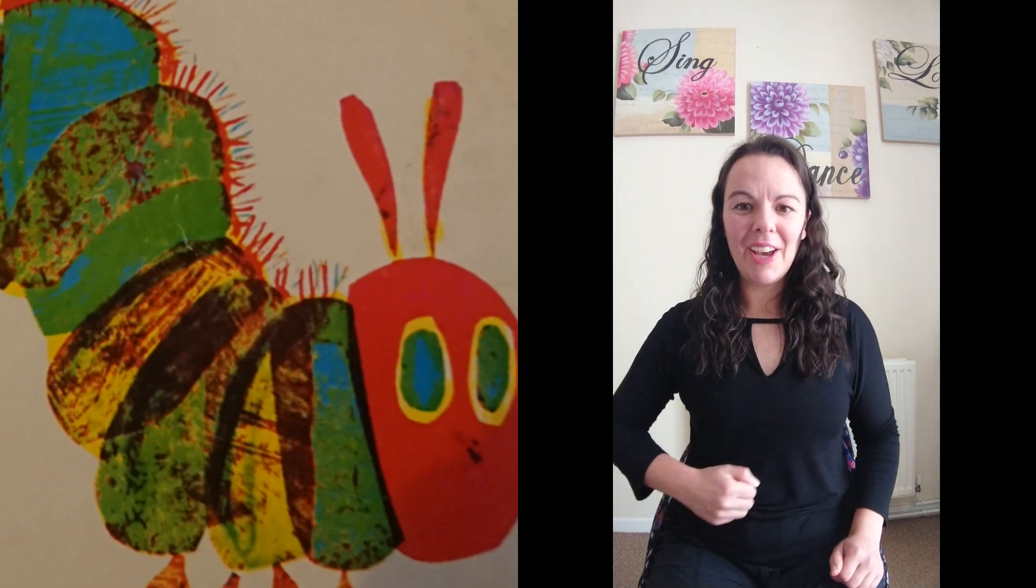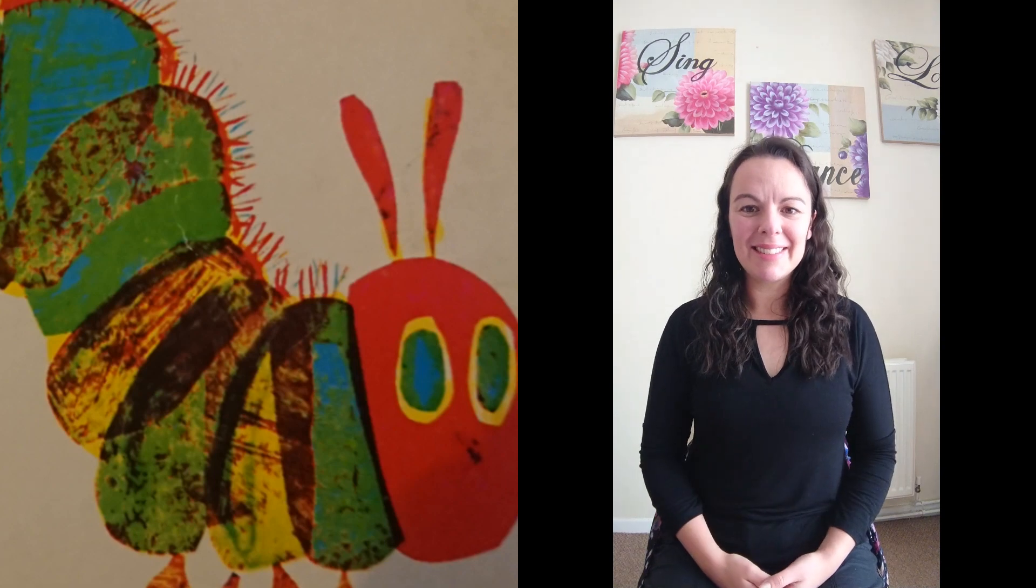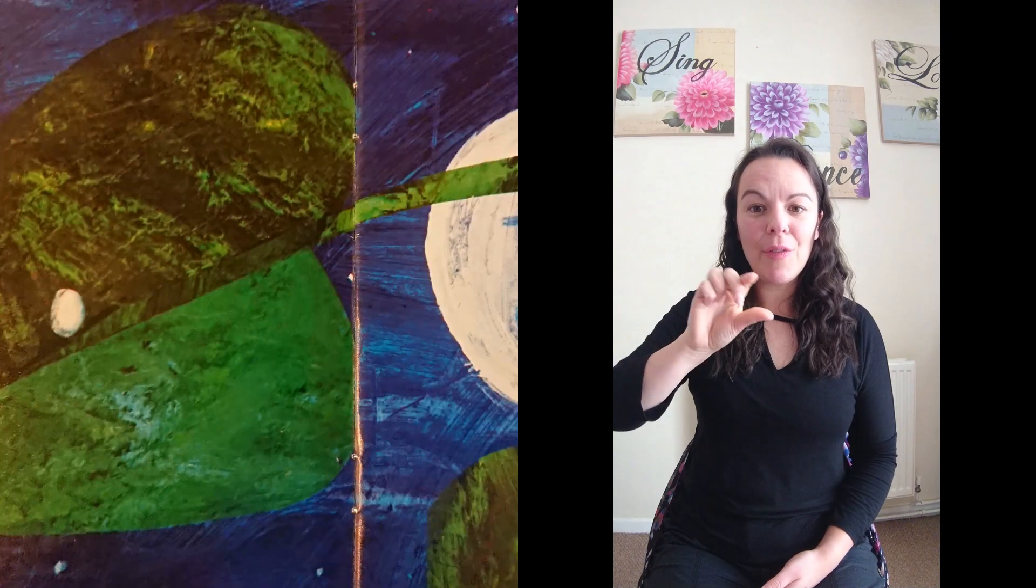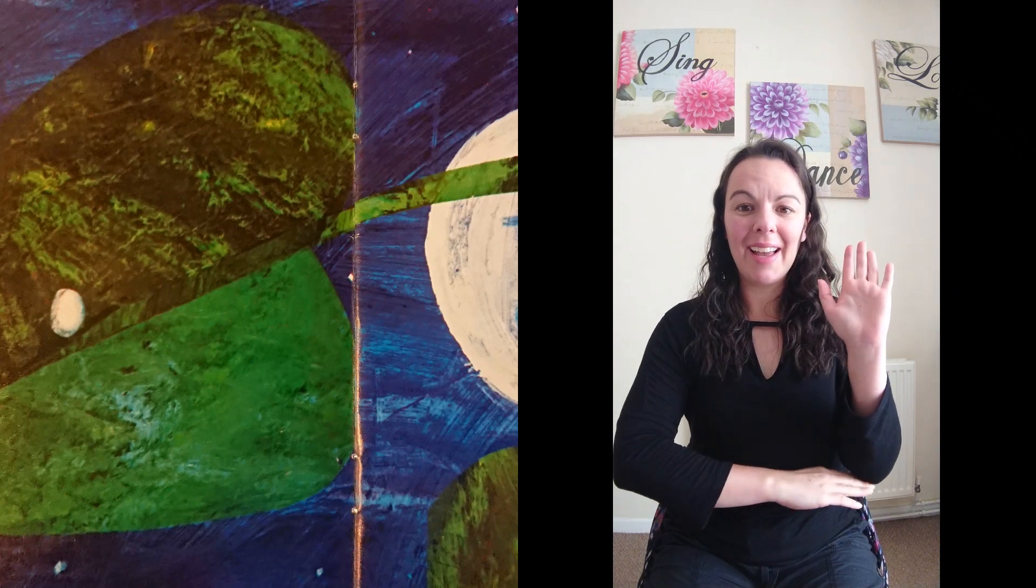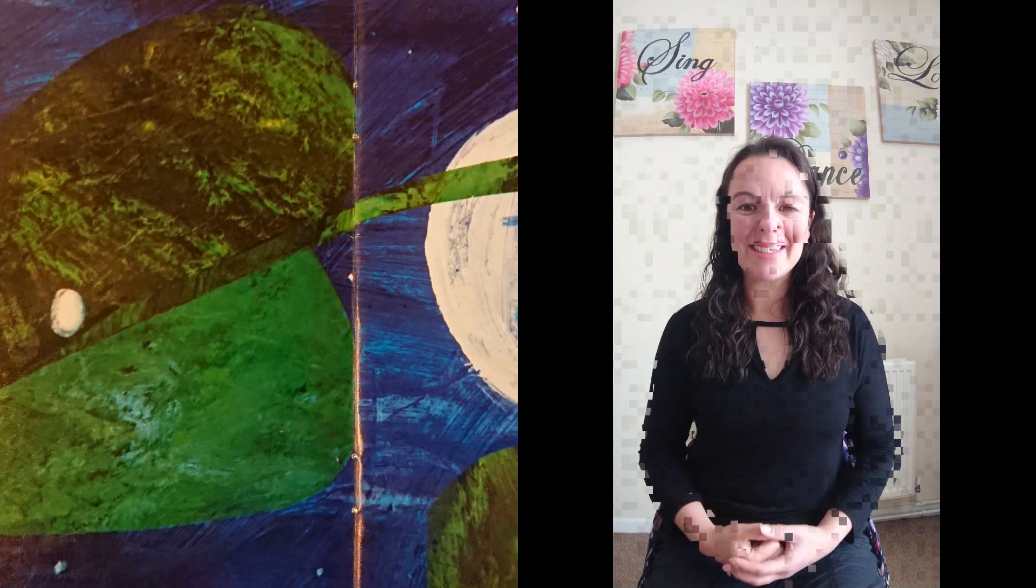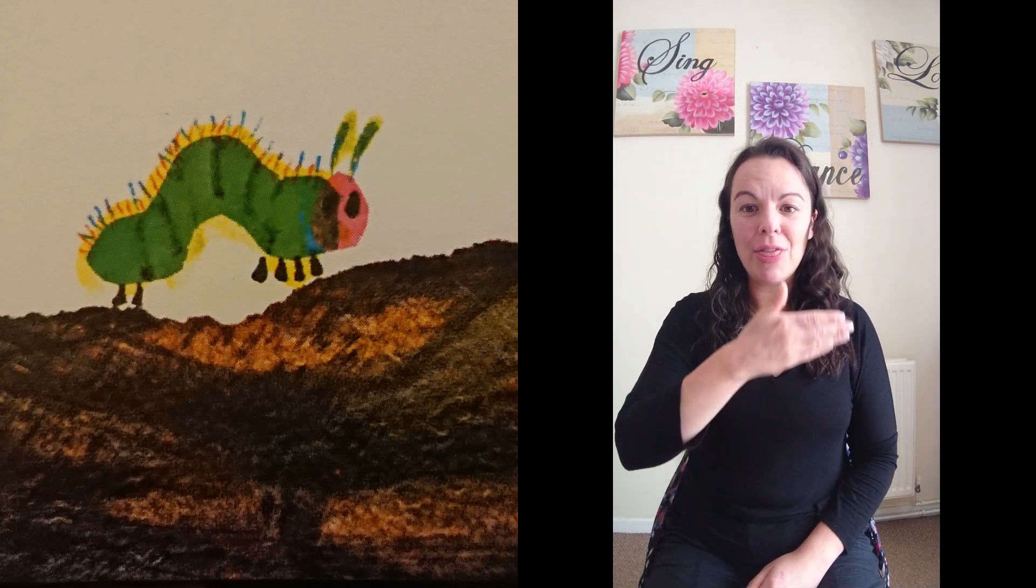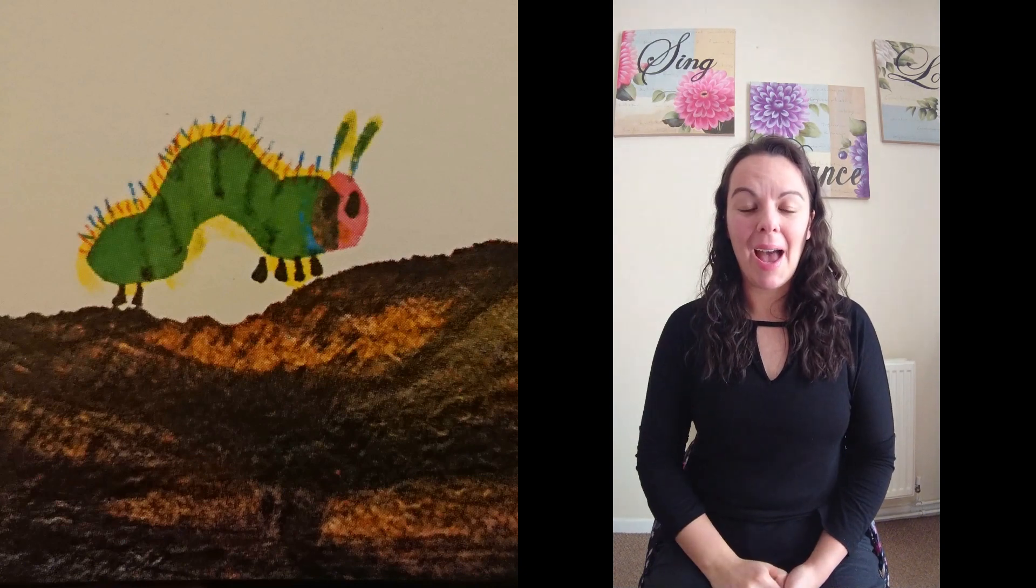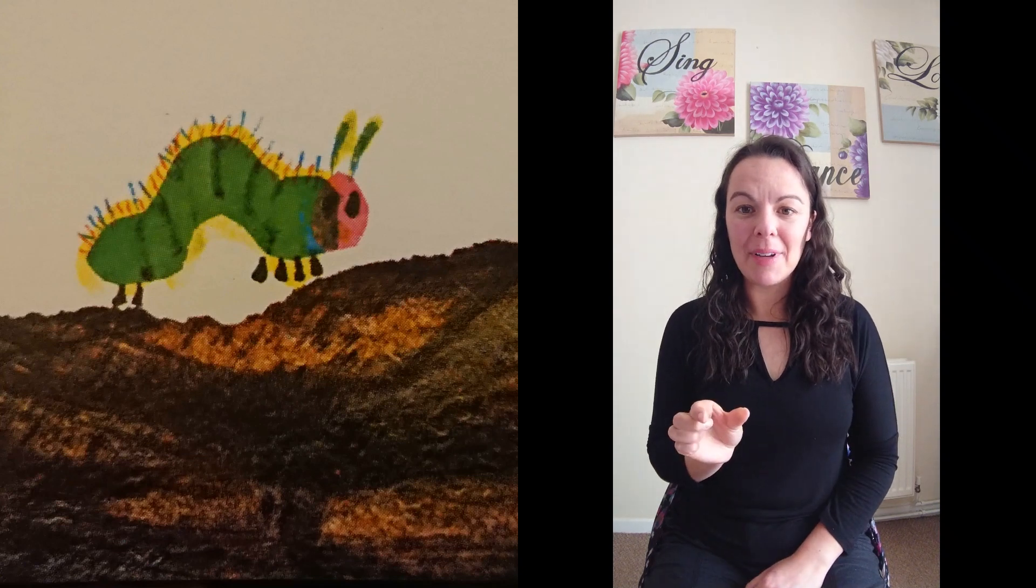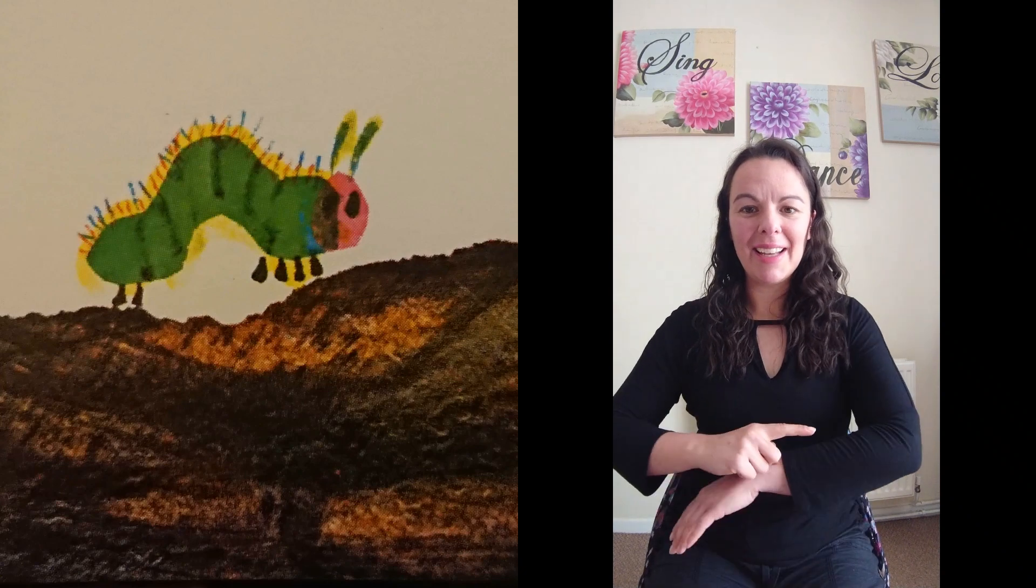The Very Hungry Caterpillar. In the light of the moon a little egg lay on a leaf. One Sunday morning the warm sun came up and pop! Out of the egg came a tiny and very hungry caterpillar.